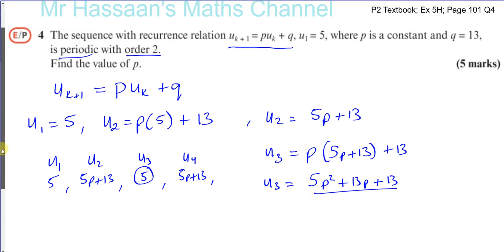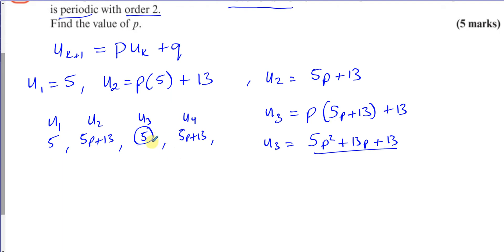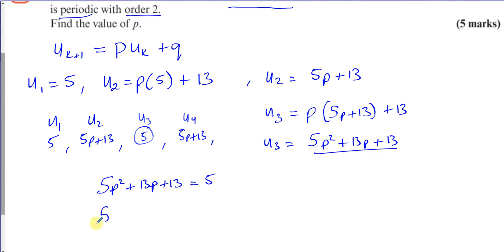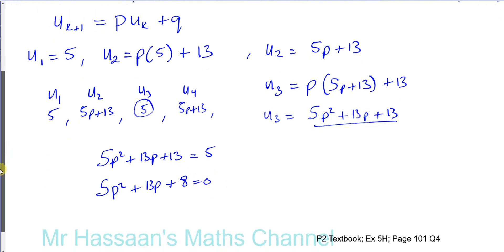We end up with a quadratic equation: 5P² + 13P + 13 = 5. Rearranging gives 5P² + 13P + 8 = 0, which we can solve to find the value of P.